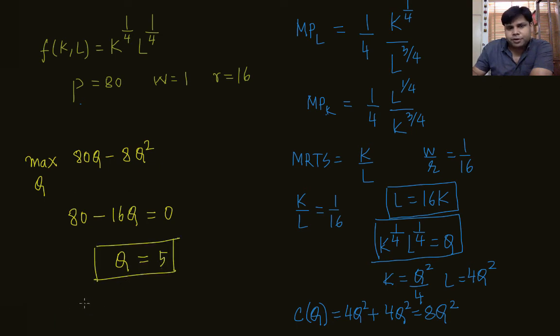Labor and capital employed to achieve this level of output will be L equals 4 times Q squared, which is 100, and K equals Q squared by 4, which is 25 by 4.